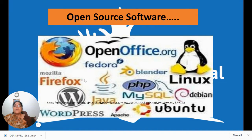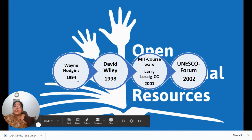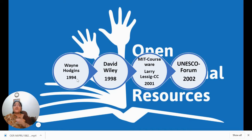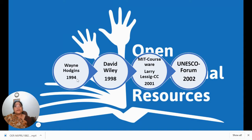Examples of open source software include OpenOffice, Firefox, WordPress, Ubuntu, and Linux. Looking at the history and evolution of OER: in 1994, Wainey Hodges gave the concept of learning objects — small, independent units of digital content that can be used across disciplines. For example, a resource on 'cell' can be used in biology, biochemistry, or home science. Metadata — information about the resource such as when it was made, by whom, in which language, and whether it is text, video, or audio — also became important.